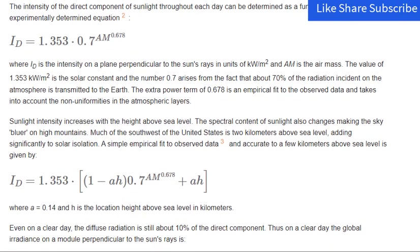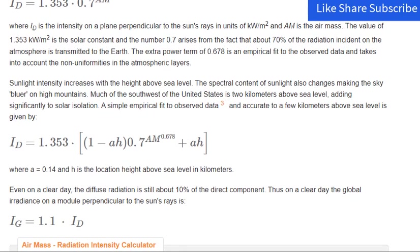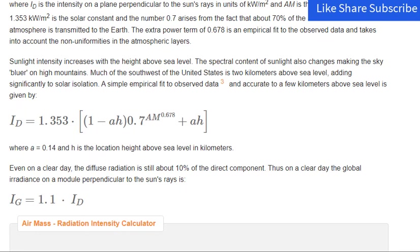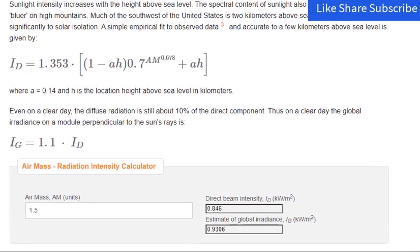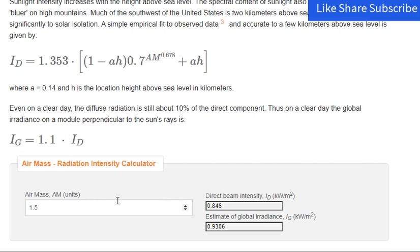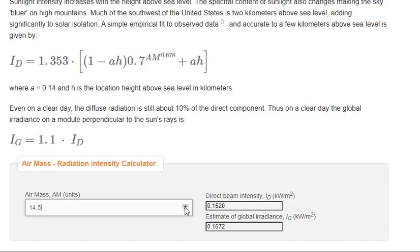The value of 1.353 kilowatts per square meter is the solar constant and the number 0.7 arises from the fact that about 70% of the radiation incident on the atmosphere is transmitted to the earth. The extra power term of 0.678 is an empirical fit to the observed data and takes into account the non-uniformities in the atmospheric layers.